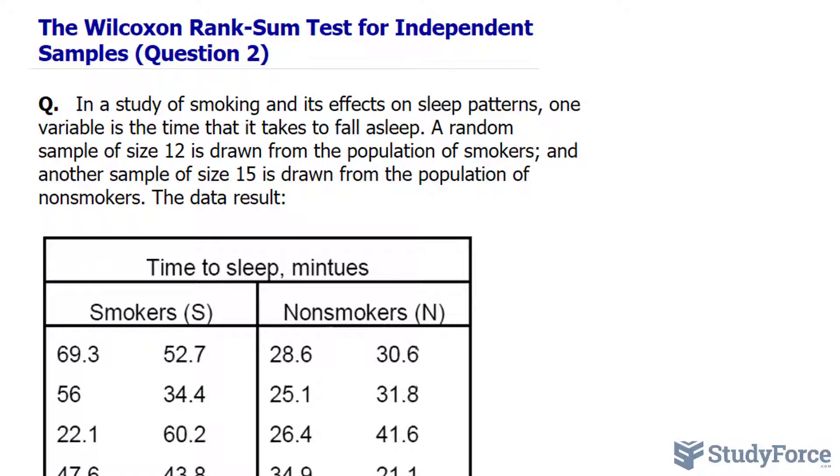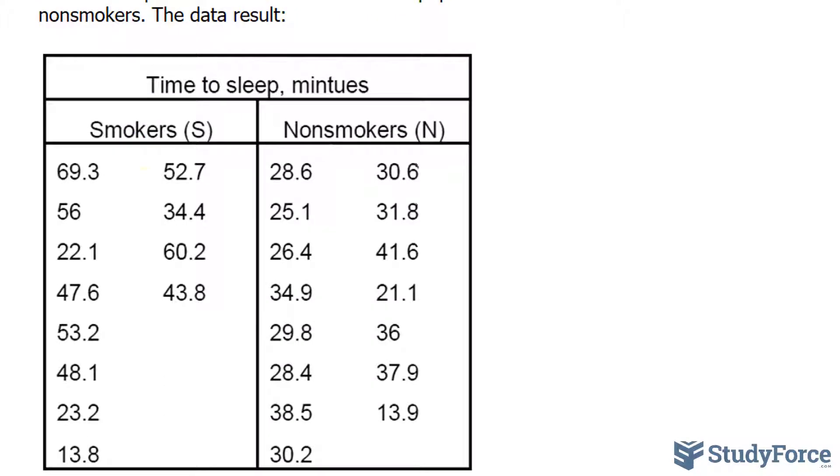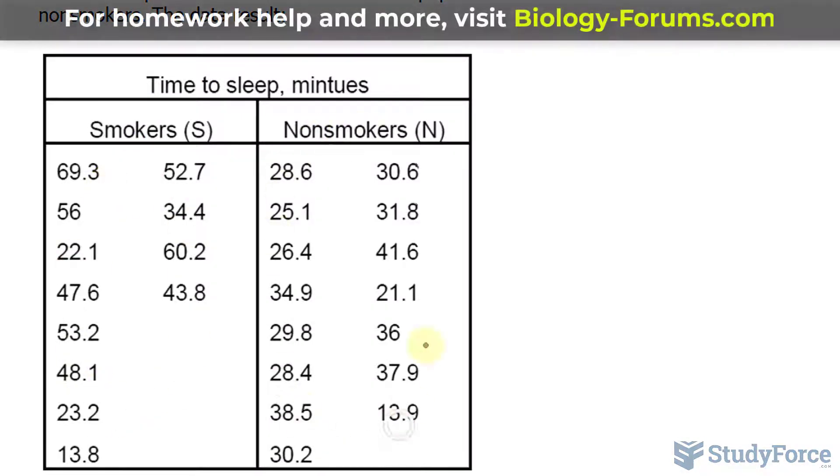To start the process off, we will be writing down the null and alternative hypothesis. But keep in mind what kind of data we are looking at. The question doesn't mention anything about being normally distributed. So we have to use a non-parametric test and not the t-test. In addition, the data is independent where the information found here isn't linked to the information found here.